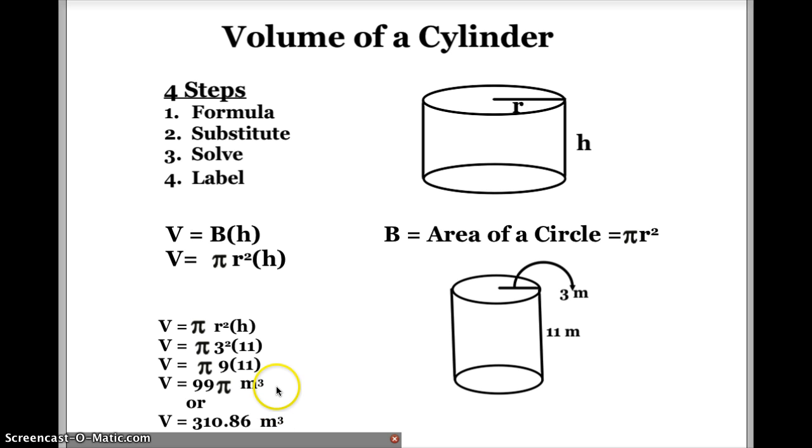And actually, even though it doesn't look as precise, the 99 pi is an exact answer, and the 310.86 is just an approximation. Hopefully that helped you solve this type of problem, and it will help you when you do volume of the cylinder problems.